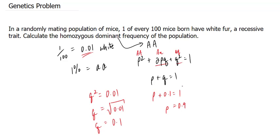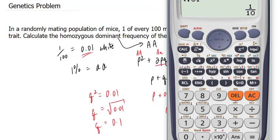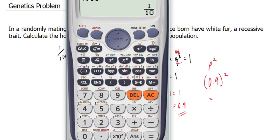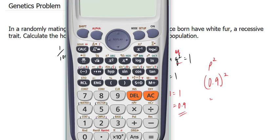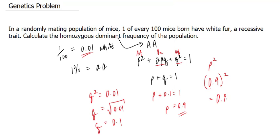To find out the homozygous dominant, we will now take this number and plug it into p². If we plug it into p², 0.9 to the power of 2 equals 0.81. In other words, 81% of this population of mice will be big A, big A.